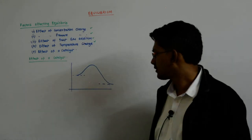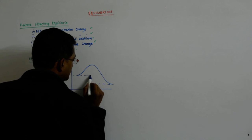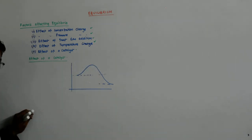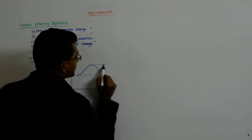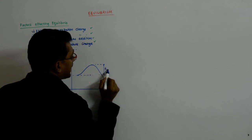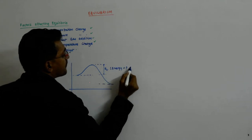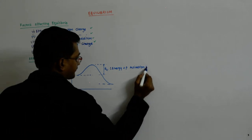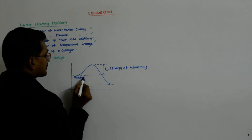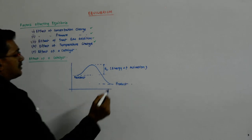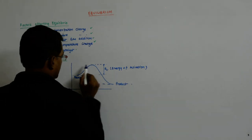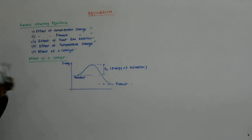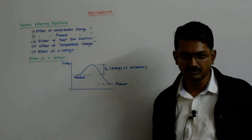Now what happens is this, the maximum energy above the energy of the reactant that it goes is called the energy of activation. This is energy of activation. This is reactant. This is the product. This is energy. This is the peak that it attains before it releases its energy and falls down. So it comes here.